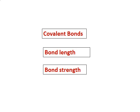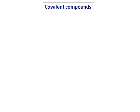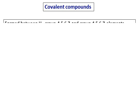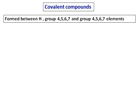In this video you will learn more about, or revise, covalent bonds and learn about bond length and the strength of bonds. Let's do some examples of covalent compounds. As mentioned before, covalent bonds are formed between two non-metals, or when hydrogen or group 4, 5, 6, 7 elements combine with each other.